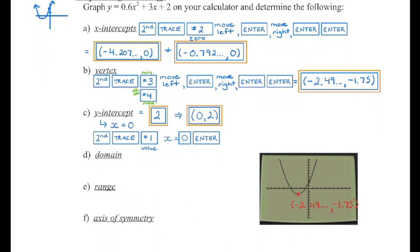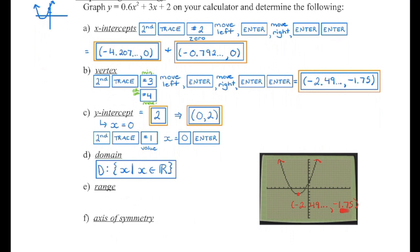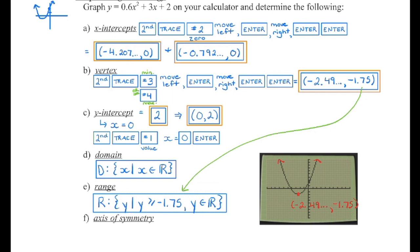Once we've identified these points, we can go ahead and state the domain and range for this particular parabola. For the domain, even though the calculator window only shows a portion, the function is actually going to continue on — the domain along the x-axis is going to be all real numbers of x. So the domain is the set of x values such that x is an element of the real numbers, as this parabola widens out and eventually touches all values of x. For the range, the lowest point is the y-coordinate of the vertex. The range is all y values greater than or equal to that point, such that y is an element of the real number system.